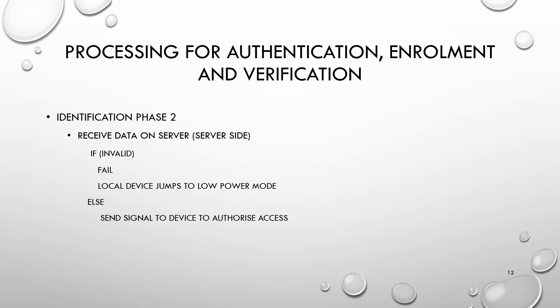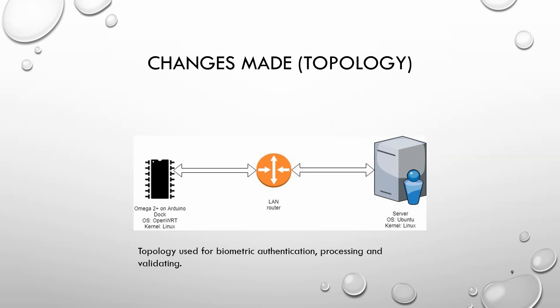Identification phase two occurs on the server side, after the server receives the picture or data from the client. Once received, the server determines whether the data is valid — in this case, whether the picture matches data present on the server. If the data is invalid, the authentication process fails and the server sends a signal to the client advising that verification has failed on phase two and to jump to low power mode. However, if the data is valid, the server authorises access to the device and its services.